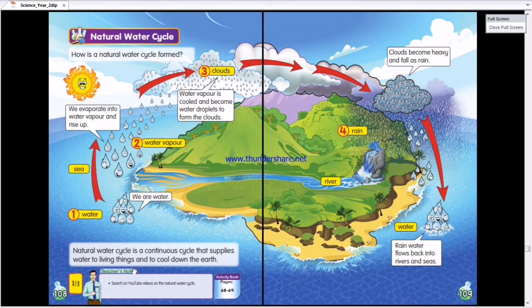Dia sebabkan cycle ni lah. Jadi kita, kita dapat sumber air semula jadi. And to cool down the Earth. Untuk menyejukkan dunia. If this not happen, the Earth will become hotter.